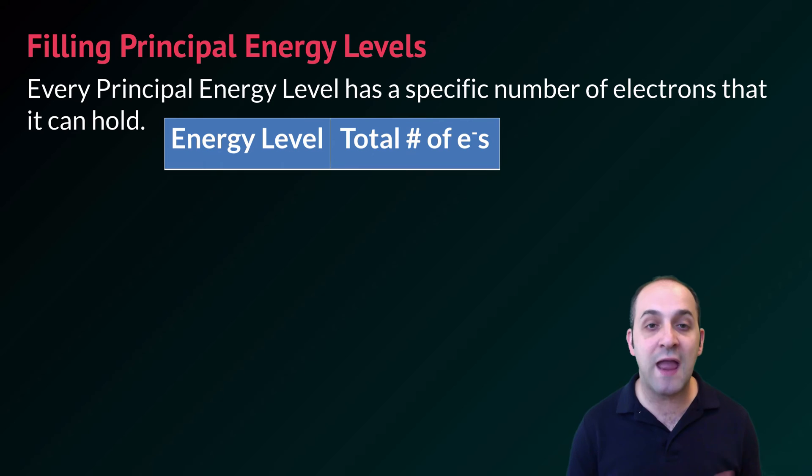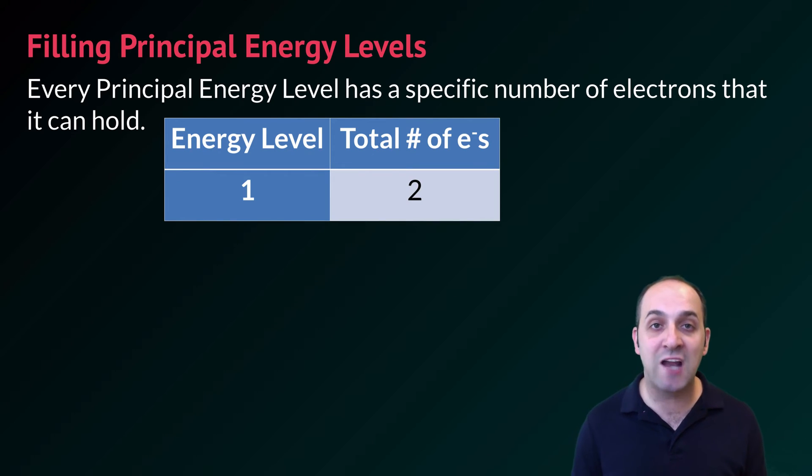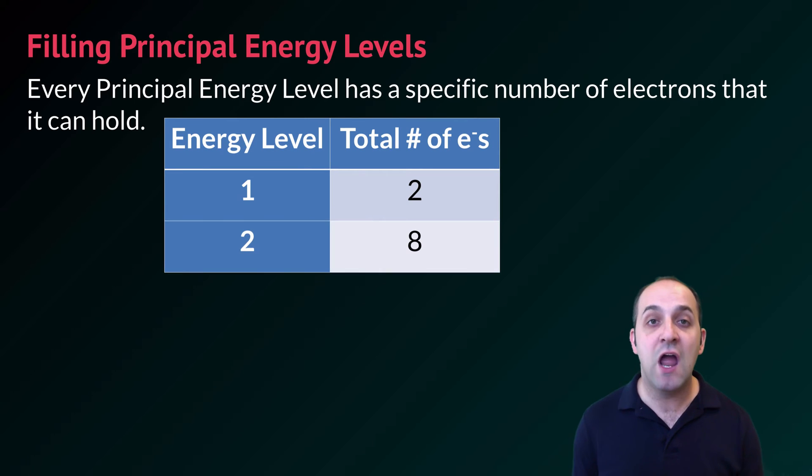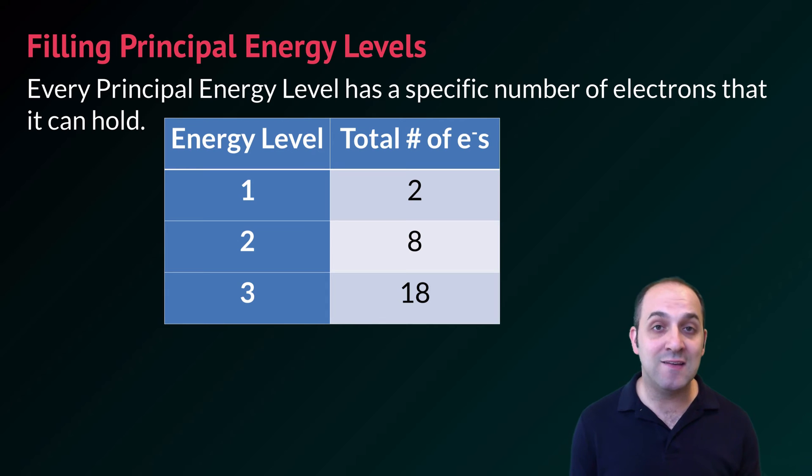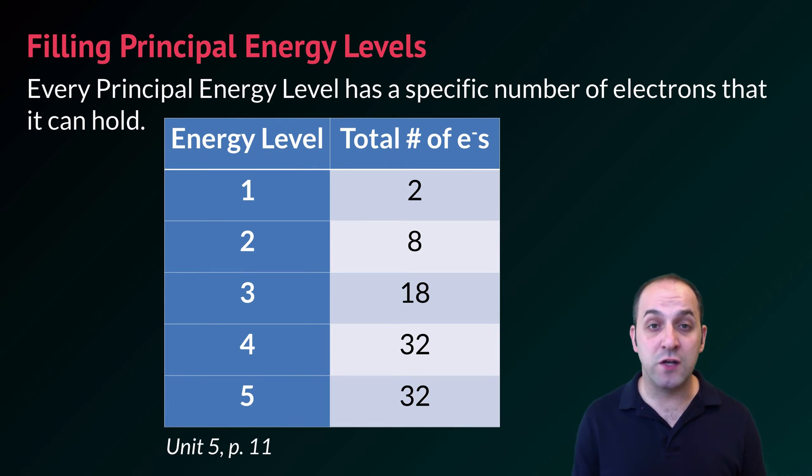This chart shows you the energy level and the total number of electrons. So in the first energy level we can fit a total maximum of two electrons. In the second principal energy level we can fit eight. In the third we can fit 18 and in the fourth and the fifth we can fit 32.